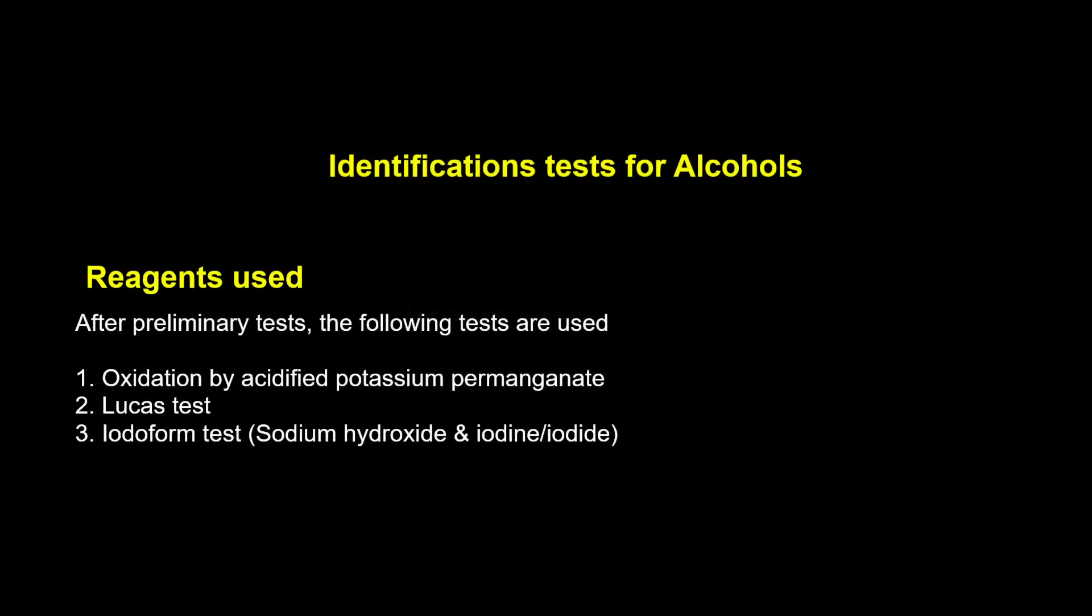Test 4: Alcohols. Alcohols have the hydroxyl functional group. After preliminary tests, they are identified using the Lucas test, iodoform test, and oxidation reaction using acidified potassium permanganate.